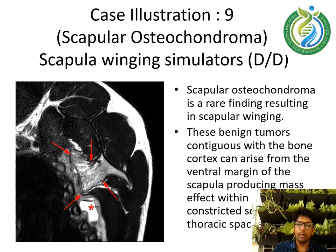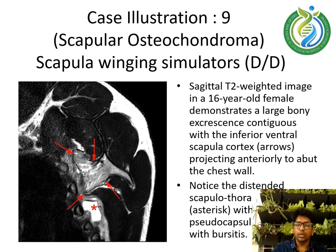Case illustration 9 — Scapular Osteochondroma as a scapular winging simulator in the differential diagnosis. Scapular osteochondroma is a rare finding resulting in scapular winging. These benign tumors, contiguous with the bone cortex, can arise from the ventral margin of the scapula, producing mass effect within the constricted scapulothoracic space. A sagittal T2-weighted image in a 16-year-old female demonstrates a large bony excrescence contiguous with the inferior ventral scapula cortex, projecting anteriorly above the chest wall, with a distended scapulothoracic bursa with a thick-walled pseudocapsule consistent with bursitis.